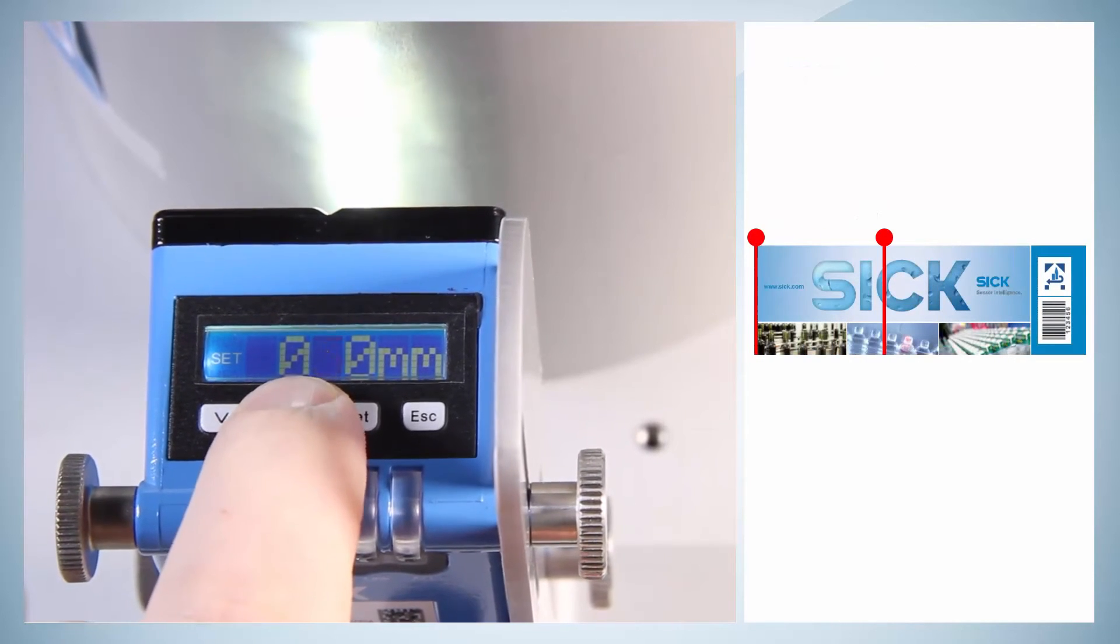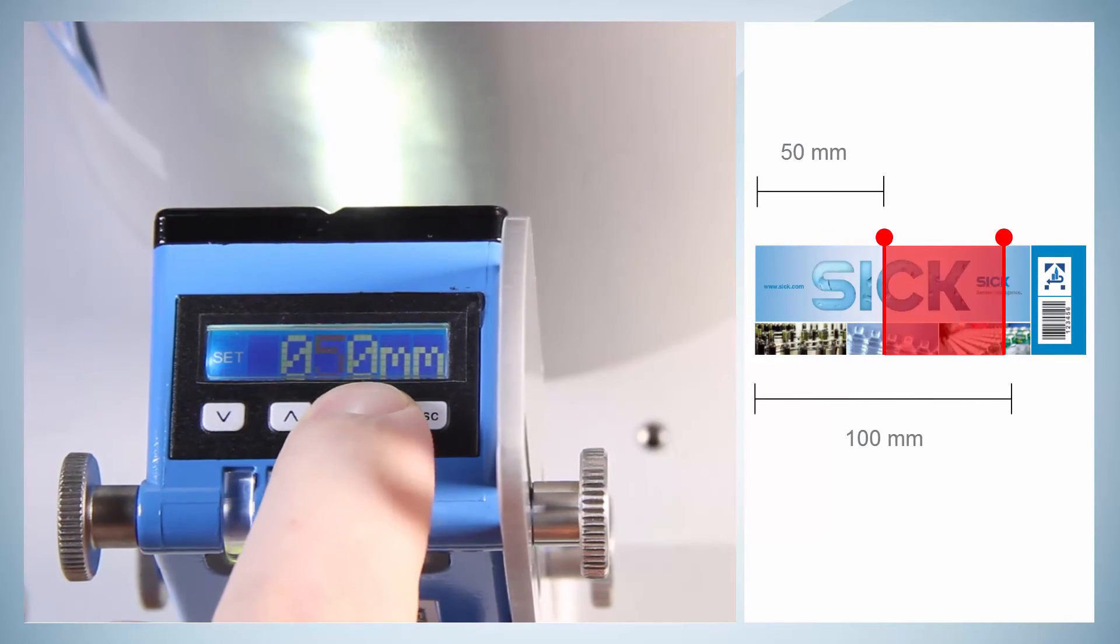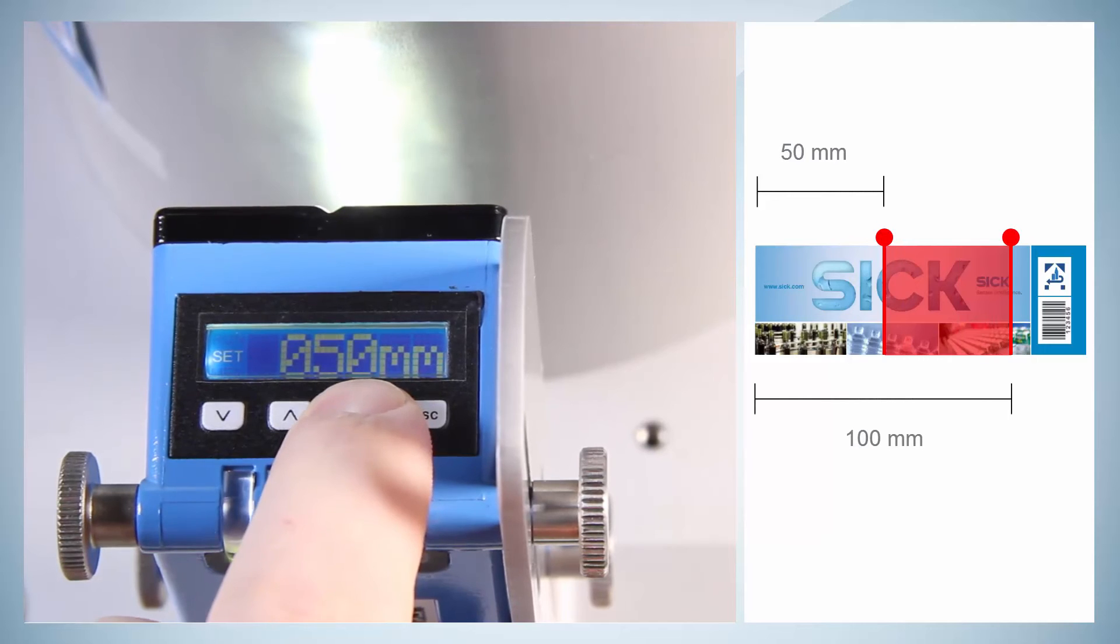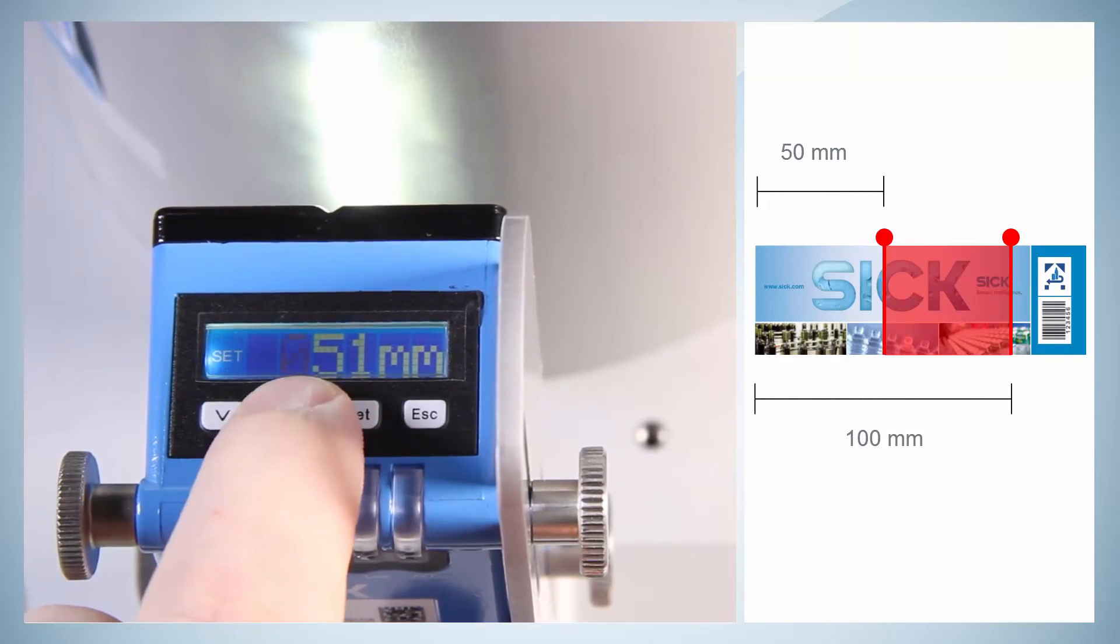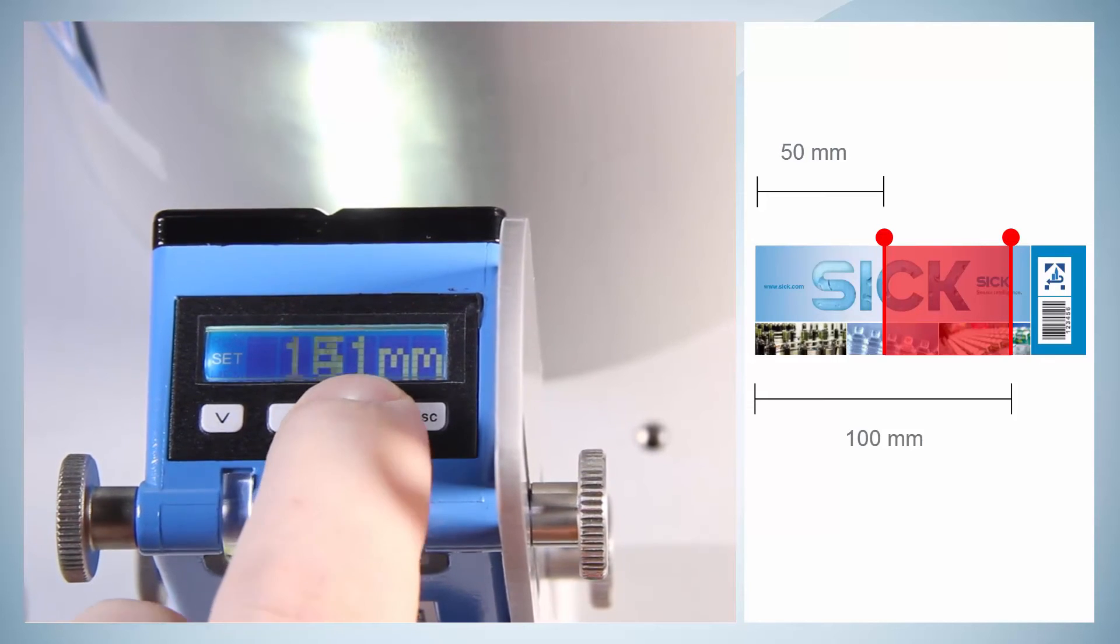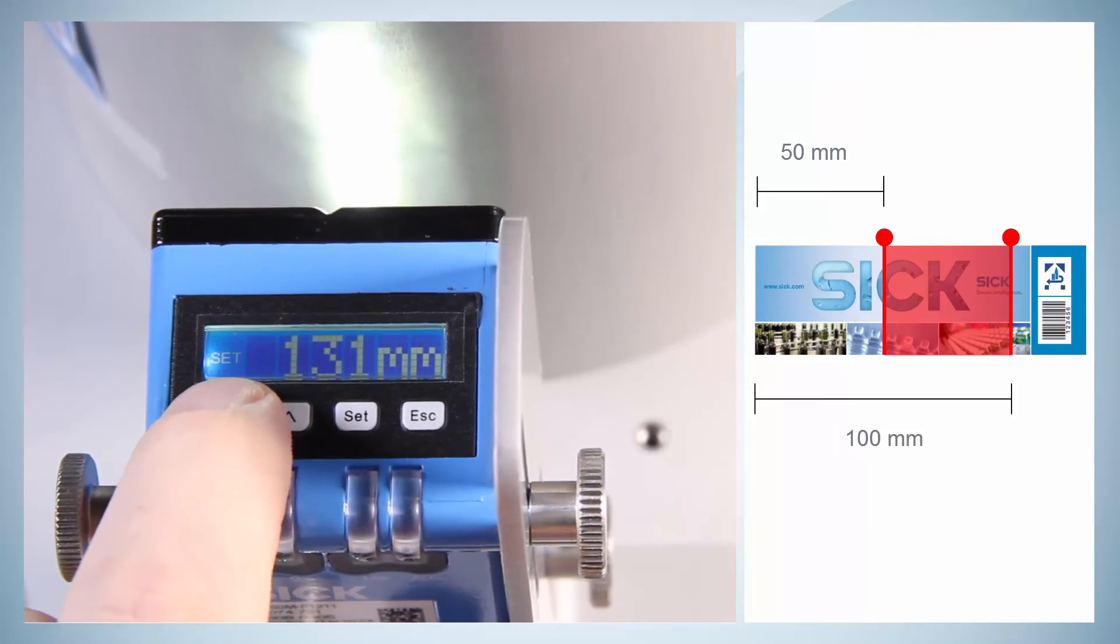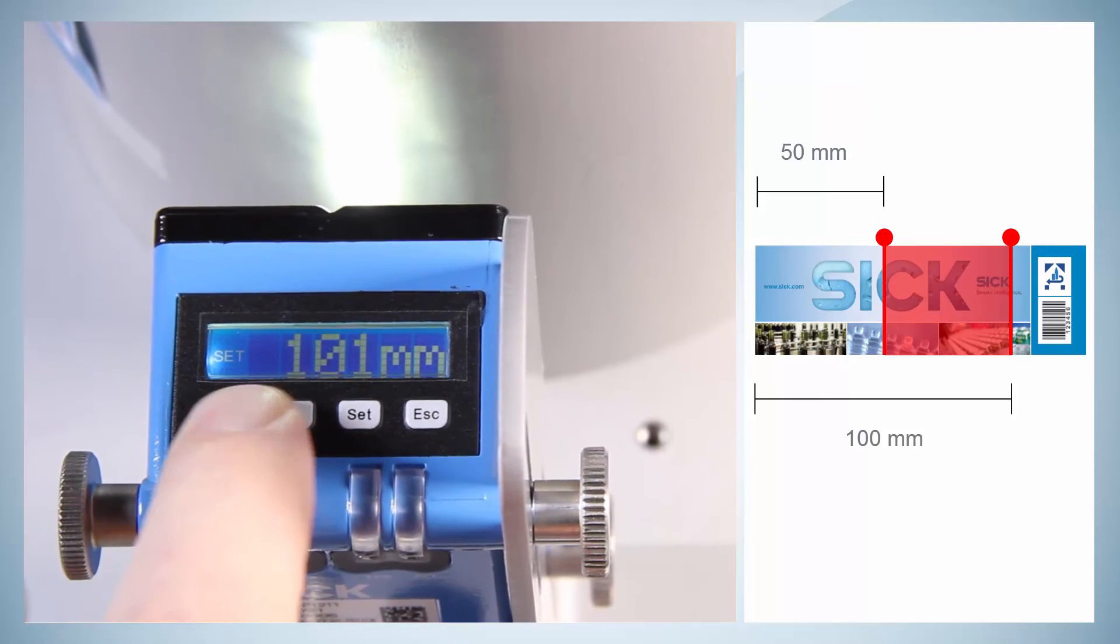As an example, area 1 is now defined from 50 to 100 mm from the current switching point. The defined area will be ignored with the following recalculation of teach-in data.